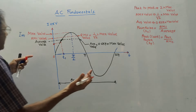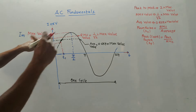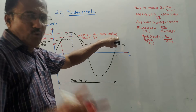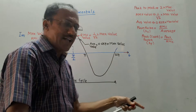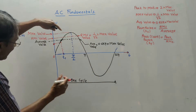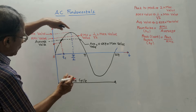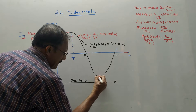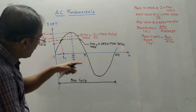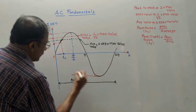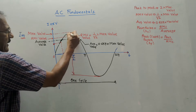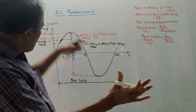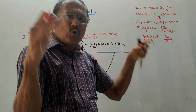Other terms include RMS value, which is root mean square value, related as RMS = (1/√2) × maximum value. The maximum value is also known as the peak value. The distance between the positive peak and the negative peak is known as the peak-to-peak value, which equals two times the maximum value.